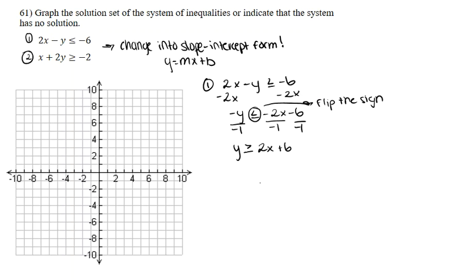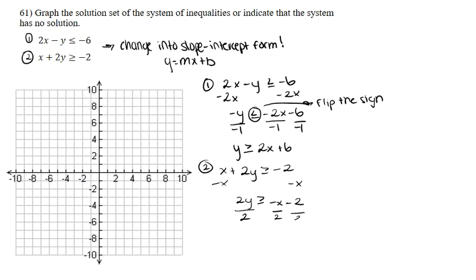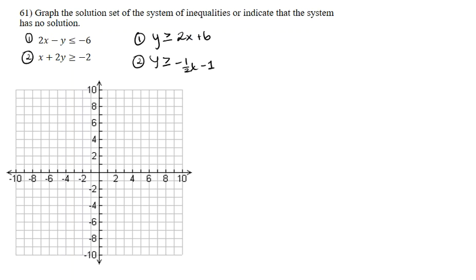For the second inequality, x plus 2y is greater than or equal to negative 2. Isolating y gives us 2y is greater than or equal to negative x minus 2. Dividing both sides by 2, we get y is greater than or equal to negative one-half x minus 1 as our second inequality.